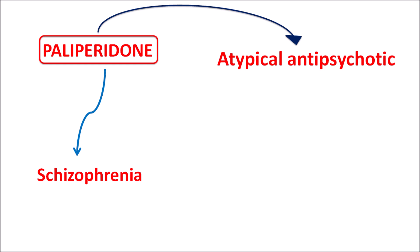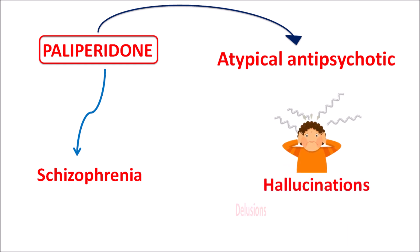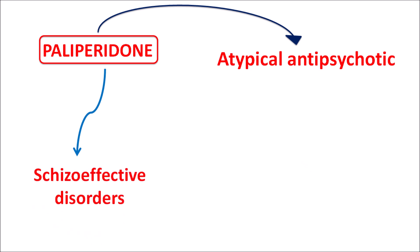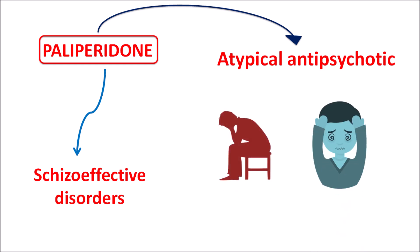Paliperidone is useful in the treatment of schizophrenia, which is associated with positive symptoms such as hallucinations and delusions, along with negative symptoms such as social withdrawal and flattening of emotions. This drug can control both positive and negative psychotic symptoms.